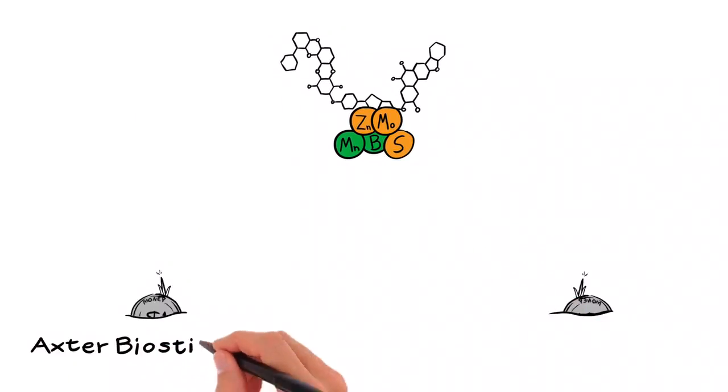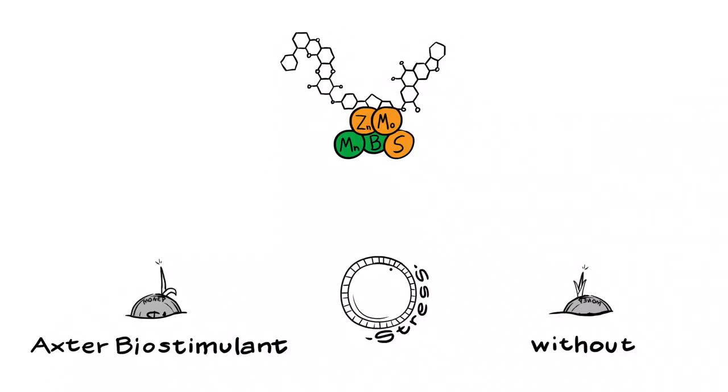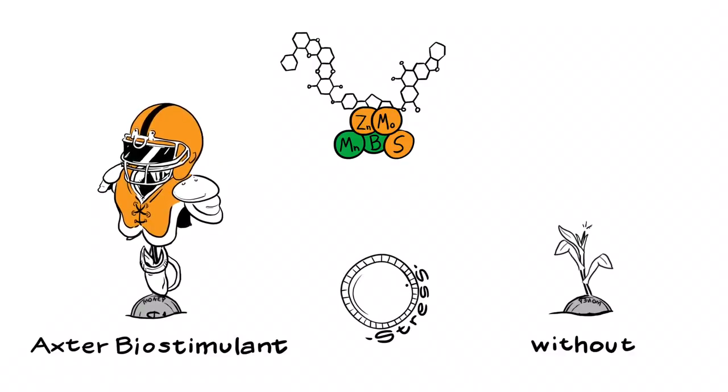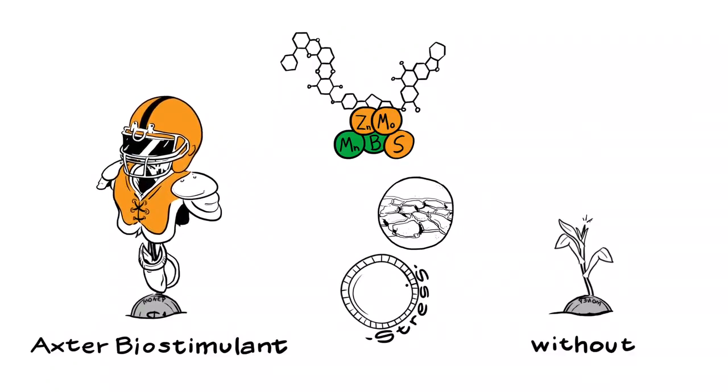With new CropBooster 2.0 and RR SoyBooster 2.0, crops overcome herbicide stress more rapidly. Plus, the added nutrients and organic acids trigger other beneficial defense mechanisms that are normally only triggered when the crop experiences stress, such as drought or heat.